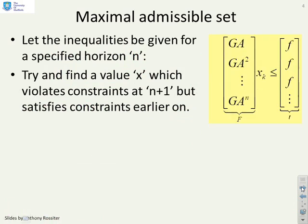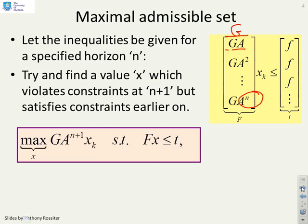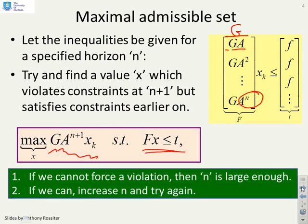How do we define our maximal admissible set? We said as long as you take a large enough horizon n, the admissible set could be given as G, GA, GA^2, all the way down to GA^n less than or equal to f. The way you test whether n is large enough is if you do this optimization: maximize over x, GA^(n+1)*x subject to Fx <= t. In essence, you're trying to force this to be not less than or equal to f. If you can force that to be the case, n is not large enough. If you can't force it, n is large enough.